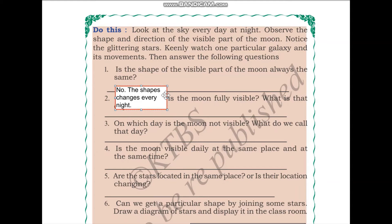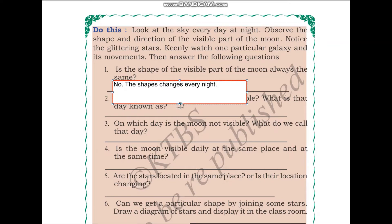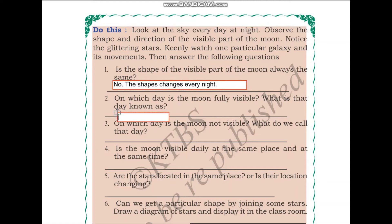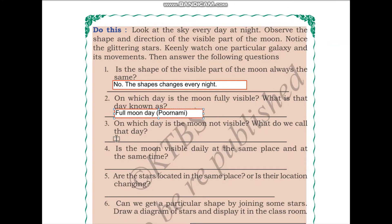Now, the next question: on which day is the moon fully visible? What is that day known as? One day every month, you will be able to see the full moon. This is known as the full moon day. In India, we call it Purnima or Purnami. Next, on which day is the moon not visible? We call this the new moon day. In India, we call it Amavasya.